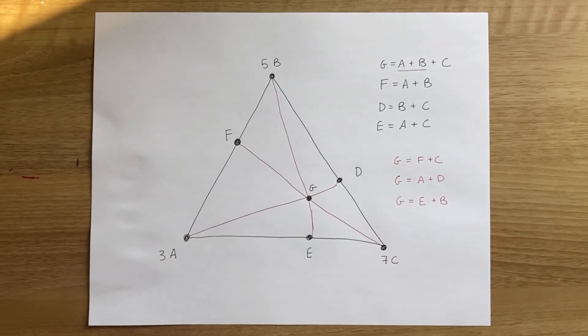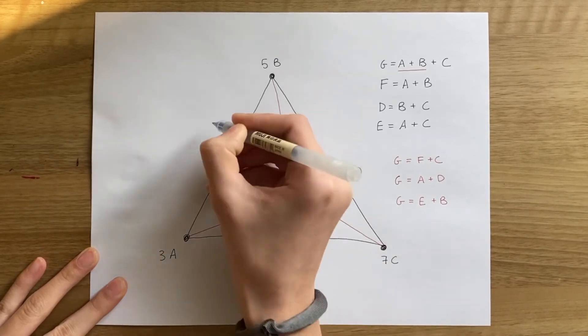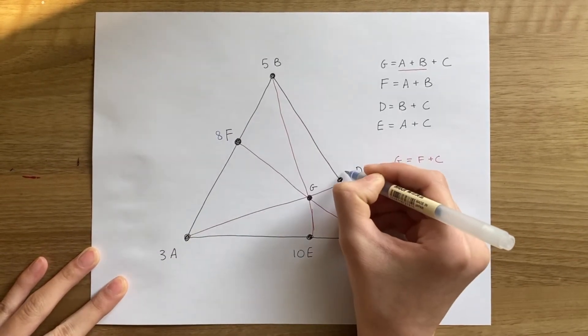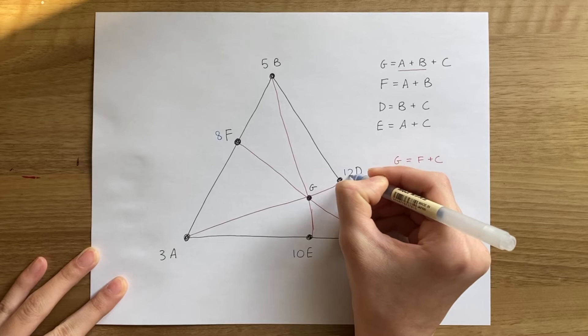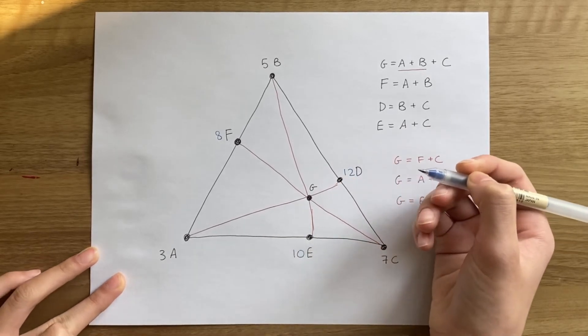Now we can find the masses of the rest of the points. E has a mass of 10, F has a mass of 8, and D has a mass of 12. Now that we know all the masses, we can find all of the ratios on this diagram.